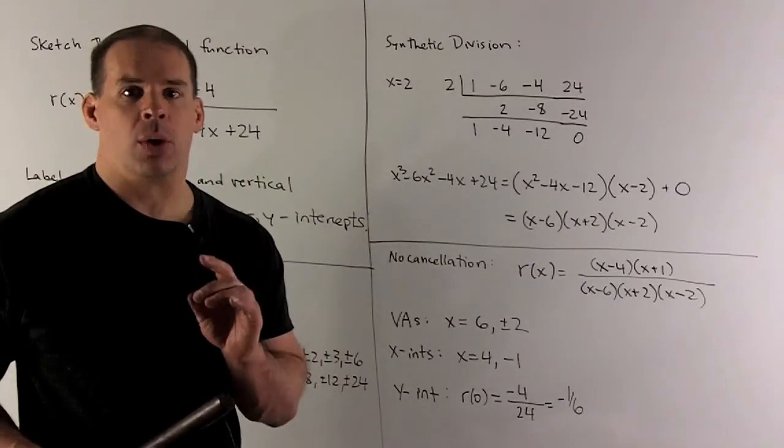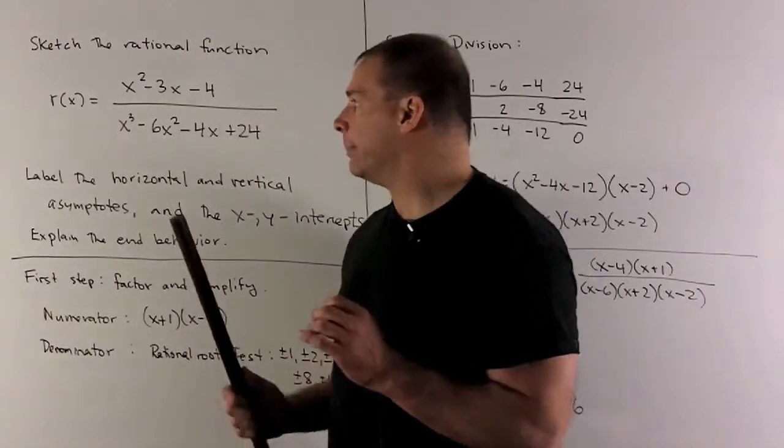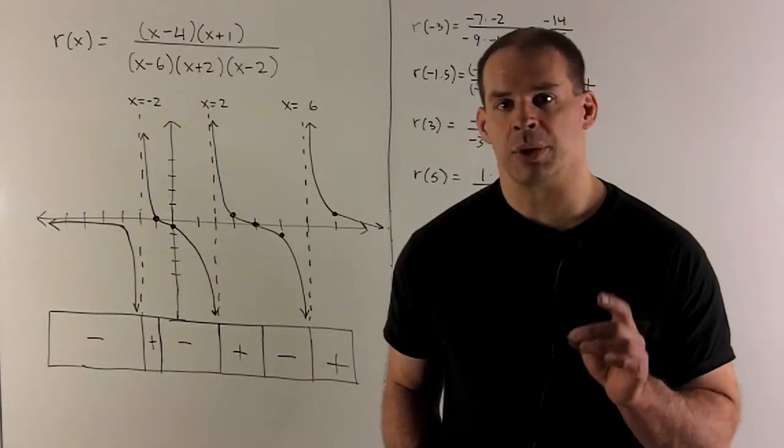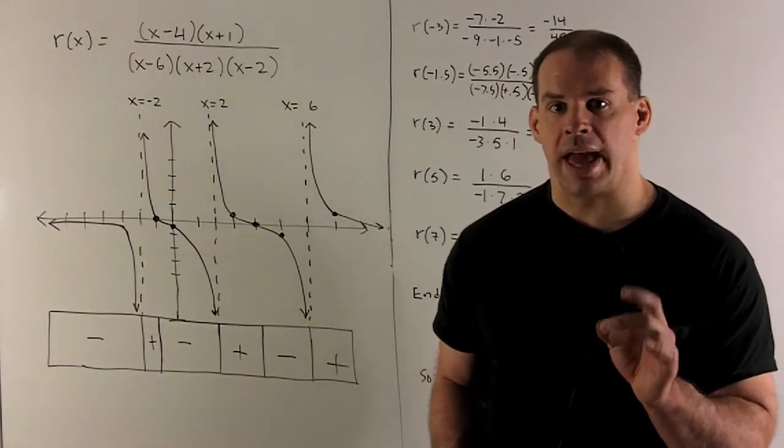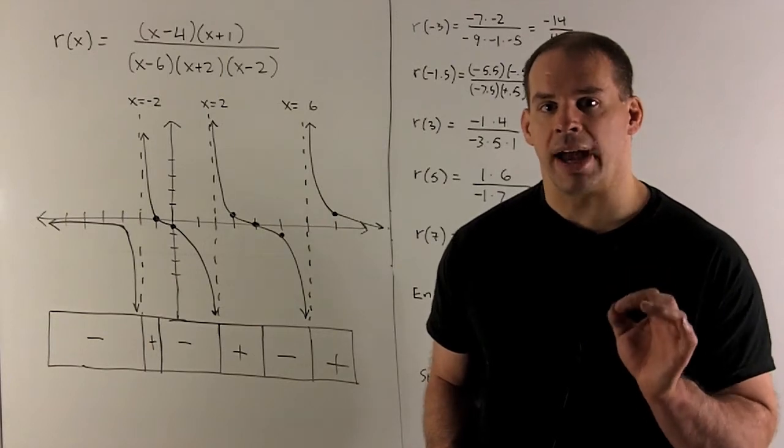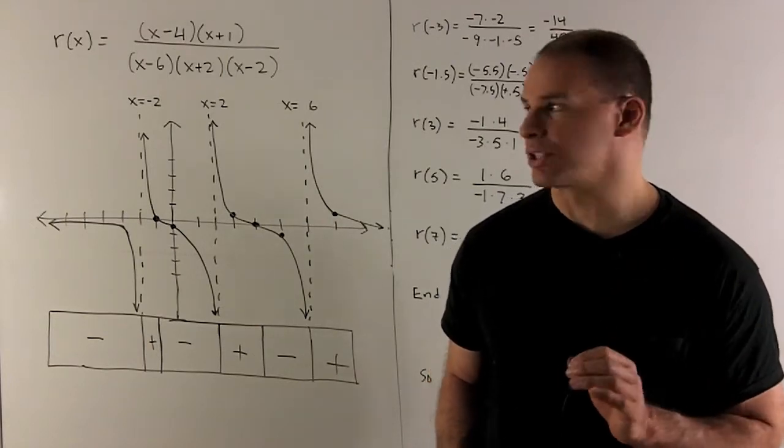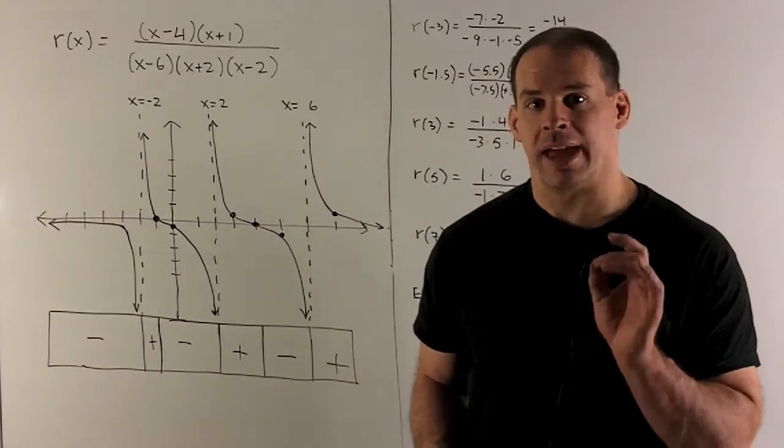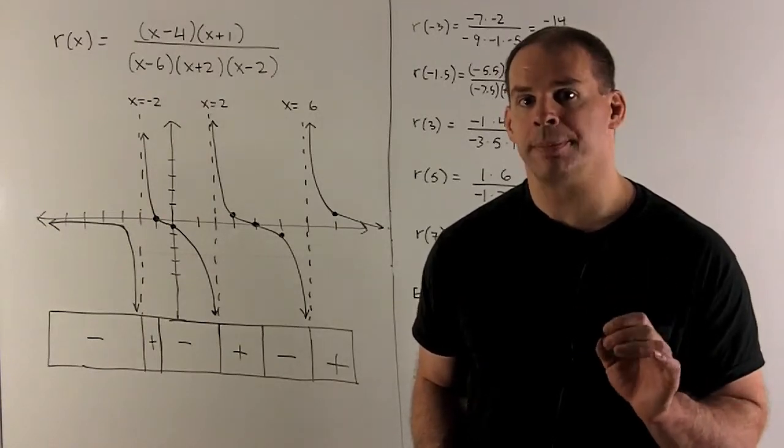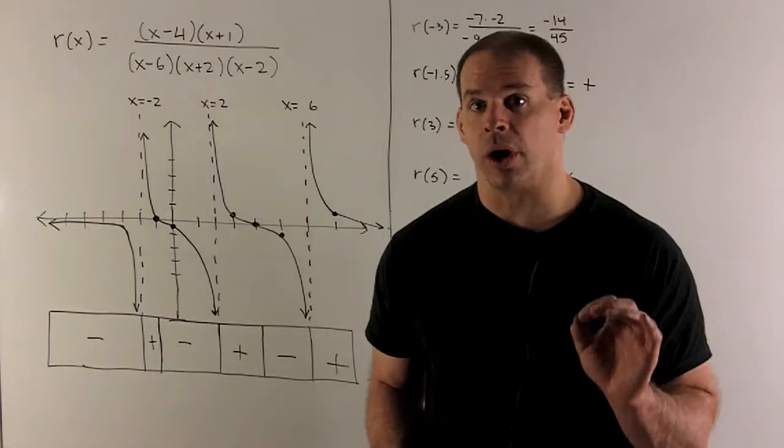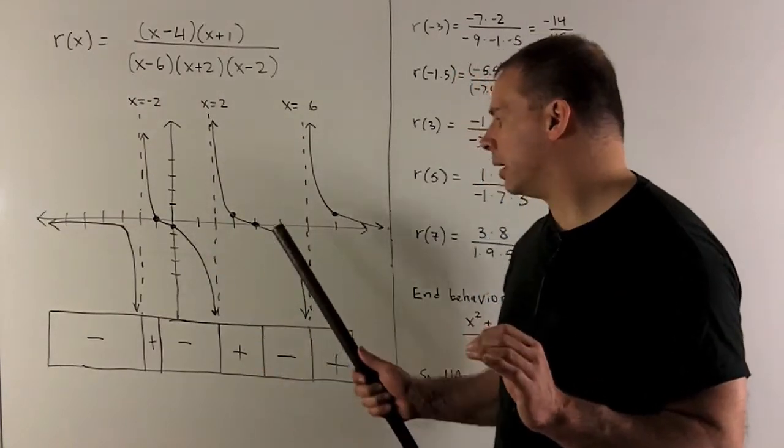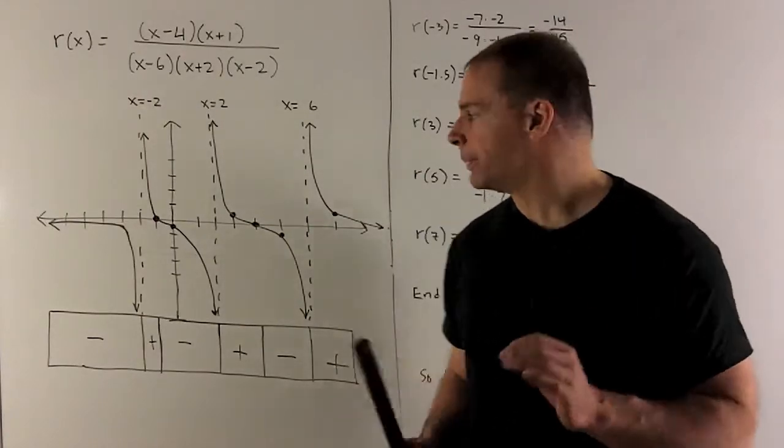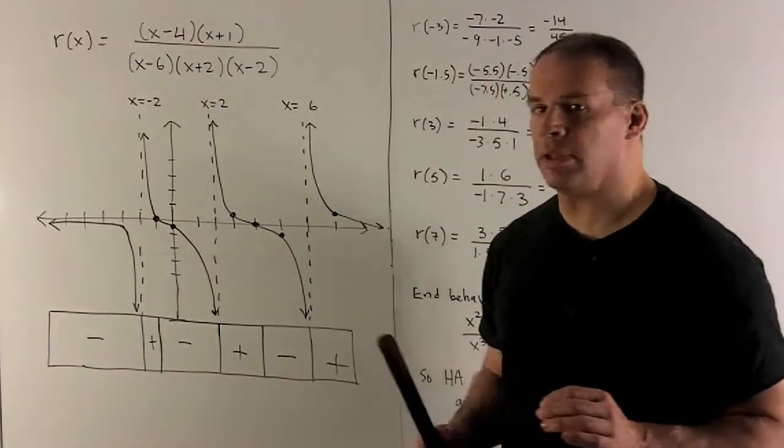Then for the y-intercept, we just stick zero into our original function. We'll have -4 over 24 or -1/6. Let's put these items on the graph. So first, the vertical asymptotes occur where x is equal to plus or minus 2 and x equals 6. Then the x-intercepts occur at x equals -1 and x equals 4. That's where the graph is zero. Finally, the y-intercept occurs at -1/6.